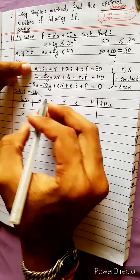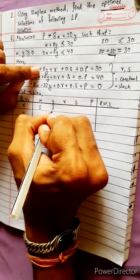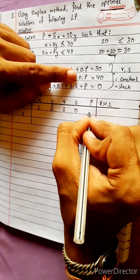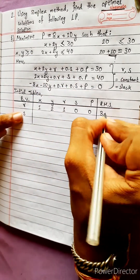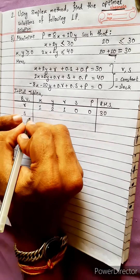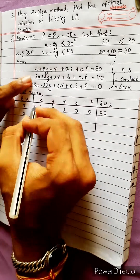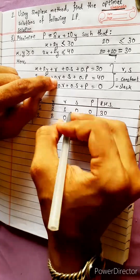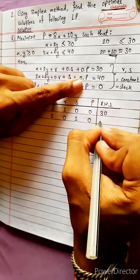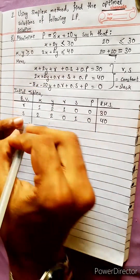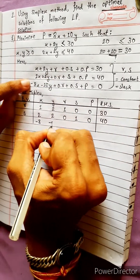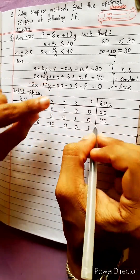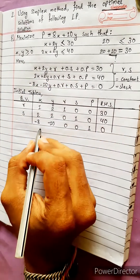This is the equation. The initial simplex table has columns: x1, y2, r1, s0, p0, and RHS = 30. For the second row: r0, s1, p0, RHS = 40. The objective row: minus 8, minus 10, 0, 0, 1p, equals 0.